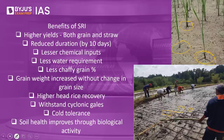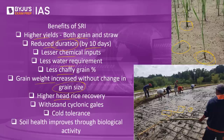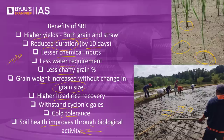The advantages of SRI include: higher yields of both grain and straw; reduced crop duration by about 10 days; lesser chemical inputs; lesser water requirement; less chaffy grain percentage; increased grain weight without change in grain size; higher head rice recovery; cold tolerance; and improved soil health through biological activity. Essentially, paddy fields are kept moist during the vegetative phase rather than flooded, requiring less seed quantity while achieving comparatively higher yield. The cultivation requires less water, involves less expenditure, and gives more yield — making it especially beneficial for small and marginal farmers.